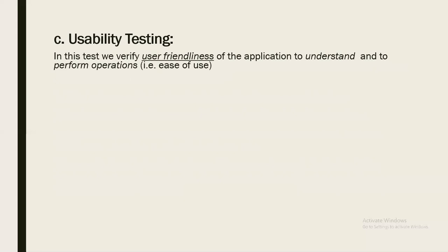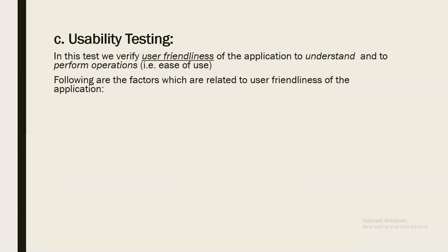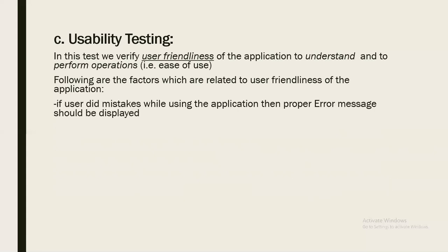That means: is the application understandable or not? Is it easy to operate or not? That is what we check in usability testing. The important keyword here is user friendliness or ease of use. So what are the factors that come under user friendliness of the application?